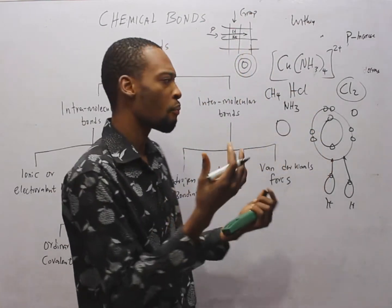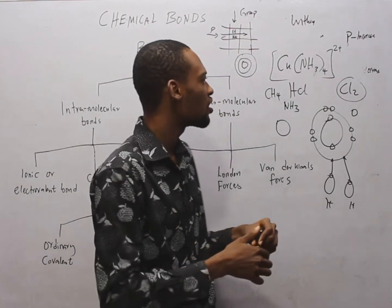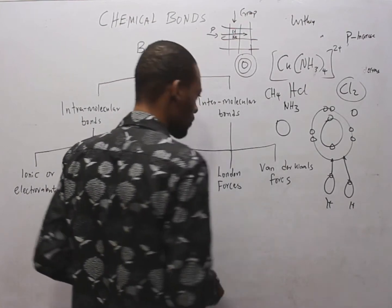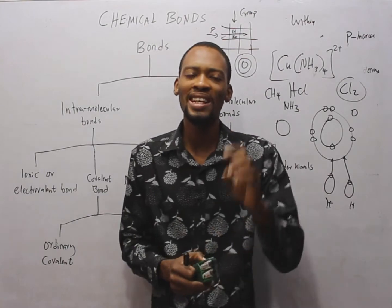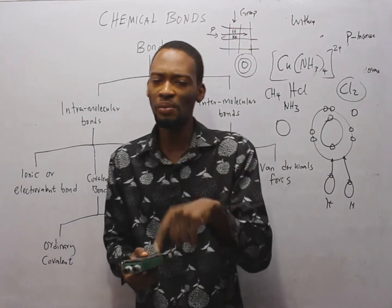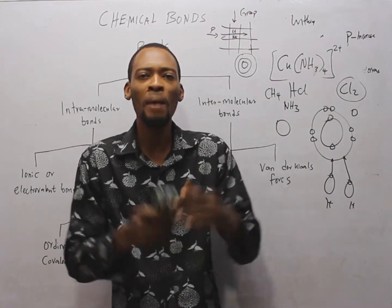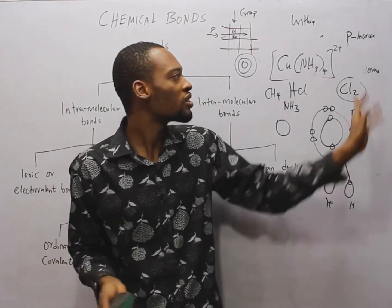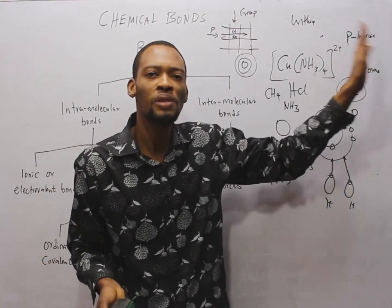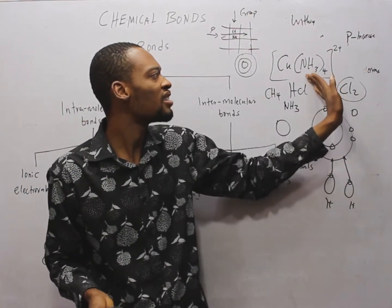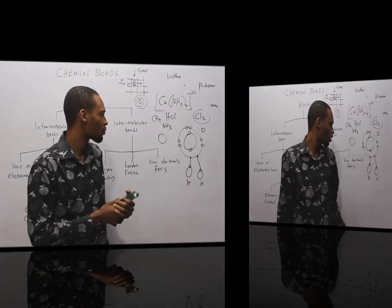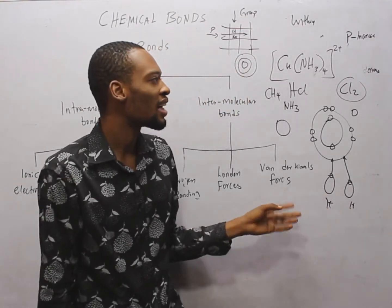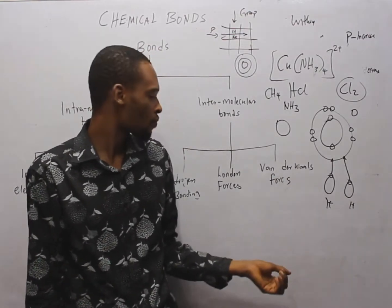Covalent bonding can be ordinary or coordinate covalent bonding. In ordinary covalent bonding the electrons are shared equally, but in coordinate covalent bonding one partner donates all the electrons. You can identify coordinate covalent bonding when you see ions like 2+ or 3+, indicating one species donates all electrons. London forces exist between polar and nonpolar molecules — examples include iodine and naphthalene crystals — and are weak forces.